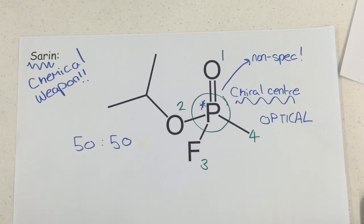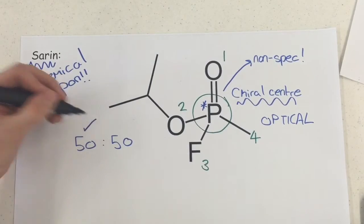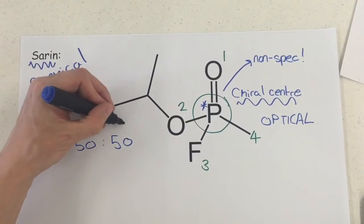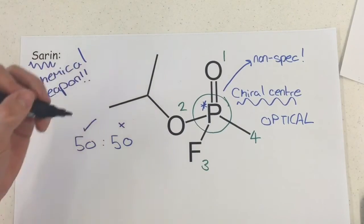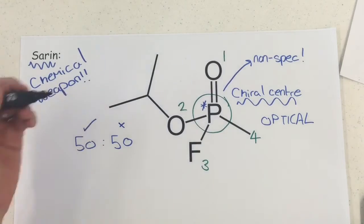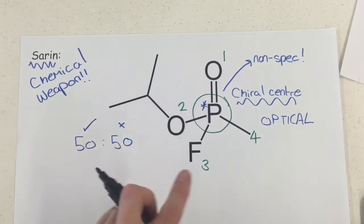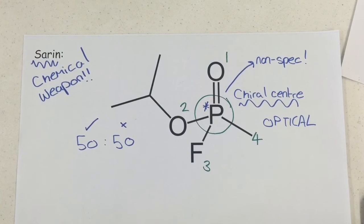Now obviously that meant that one of these isomers was good for its purpose and the other was bad, and it had disastrous consequences. So one of the big things in pharmaceutical research is to make sure if there is an optical isomer, to check to see if it has a different effect.